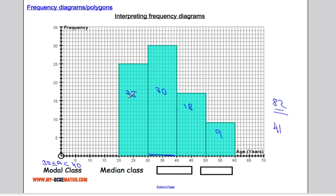Where does that happen? Well, I've got 25 pieces of data up to this point plus another 30 would give me 55 in cumulative frequency. So that means the 41st piece of data is in here somewhere. So that would be my median class: 30 less than or equal to a less than 40.